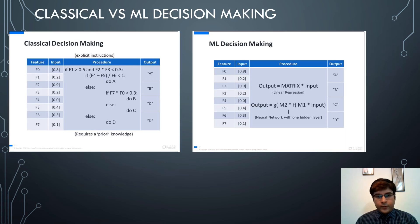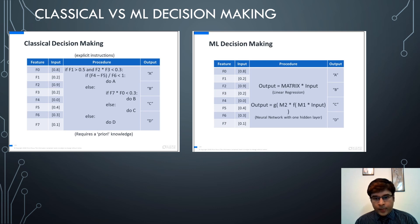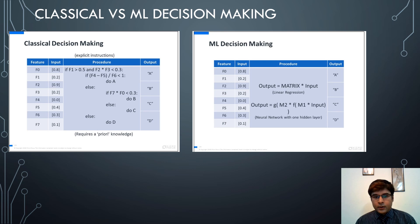This slide covers classical decision making versus machine learning decision making. On the left side you can see an exact algorithm to do a program, and on the right side the machine learning equivalent. The output can be produced using a linear regression model or a neural network with one hidden layer. More details about linear regression and neural networks will be covered in future modules.